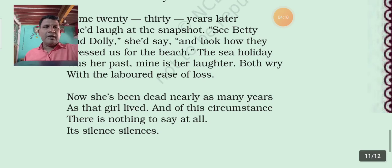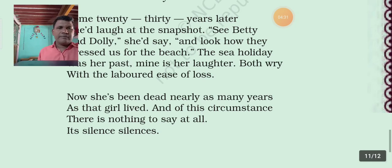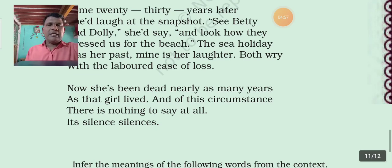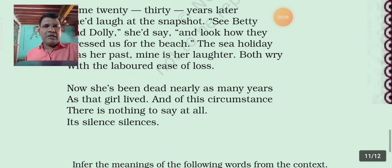Now she's been dead nearly as many years as that girl lived, and of this circumstance there is nothing to say at all. It's silence silencing. Students, you see that every line doesn't have any punctuation, so the poetic device enjambment is used here. In the last line, 'it's silence silencing' — the S sound and letter is repeated, so alliteration is used. And silence is abstract but it is used for the picture, the photograph. So personification is also used in this line.